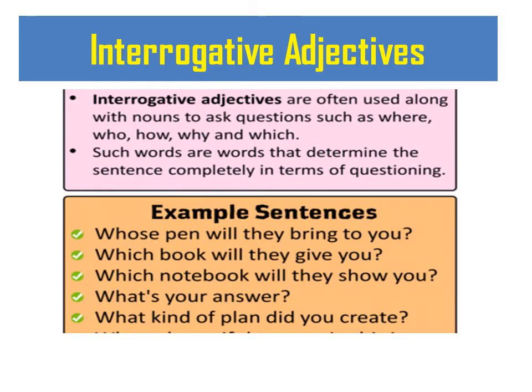Now comes the third one — interrogative adjective. Interrogative adjectives are often used along with nouns to ask questions using words such as where, who, how, why, and which. Such words determine the sentence completely in terms of questioning. For example: Whose pen will they bring to you? Which book will they give you? Which notebook will they show you? What's your answer? What kind of plan did you create? Hope you have understood children.